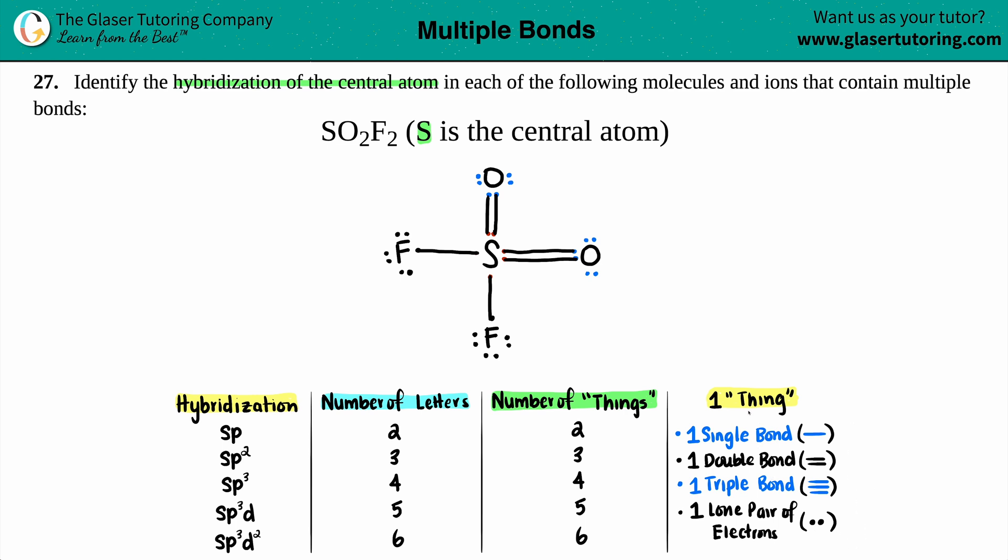So either one single bond, or one double bond, or one triple bond, they're all classified as one thing. So don't get confused when you see two lines, just group them as one thing, right? The triple bond has three lines, but it's still classified as one thing. And one lone pair of electrons, that's also one thing.